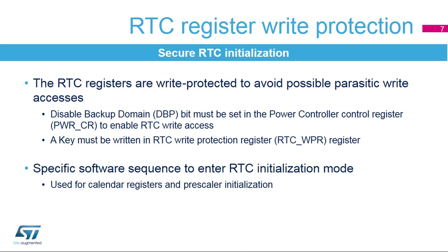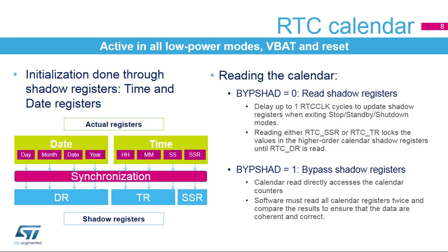The RTC is initialised using a safe method. The RTC registers are write-protected to avoid any possible parasitic write accesses. First, the disable backup domain protection bit must be set in the power controller control register in order to enable RTC write accesses. Then, a specific sequence must be written in the RTC write protection register. Initialisation mode must be entered to change the clock pre-scaler values or the calendar value. The RTC calendar keeps running in all low-power modes, in VBAT mode and during reset. Initialisation of the time and date registers is performed via their shadow registers, which are in the APB clock domain.